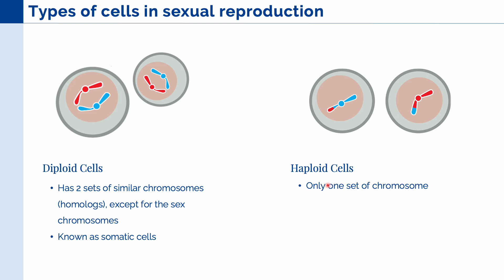Haploid cells are so called because they only have one set of chromosomes, and they are derived from a special set of diploid precursor cells known as the germline. In this figure, we can notice that the haploid cell only contains one copy of the chromosome, but it is a combination of both the maternal and paternal chromosome, as indicated by the two colors we can see in these cells — red and blue.